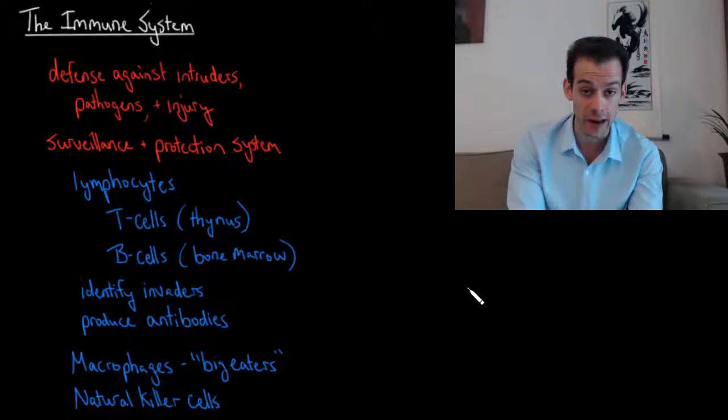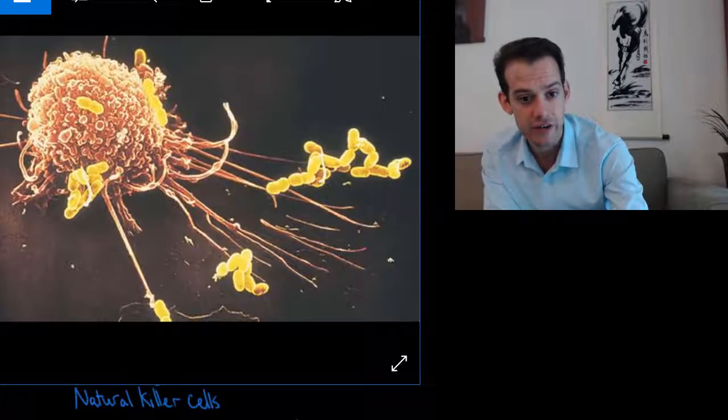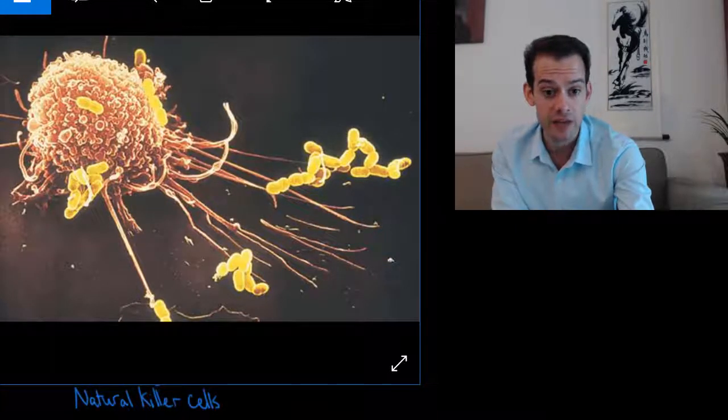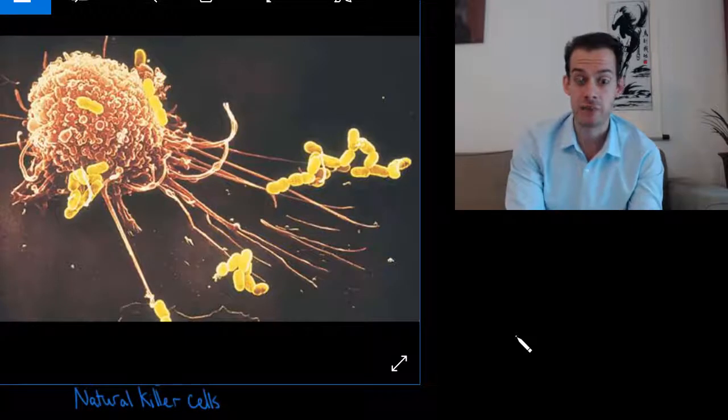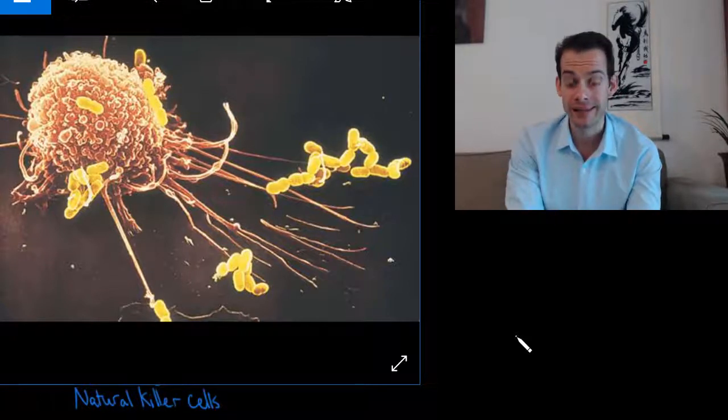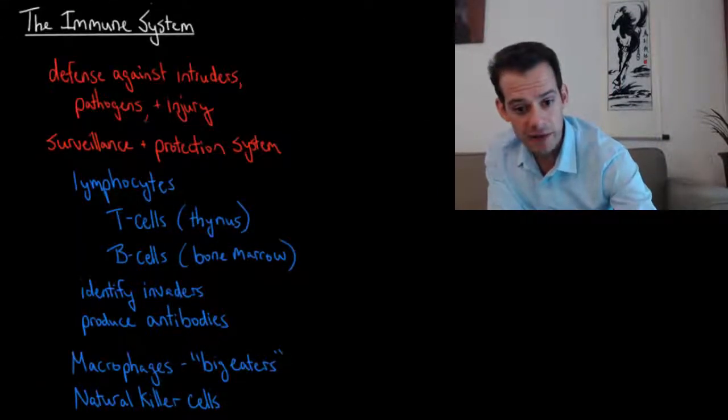And lymphocytes are aided in this task of fighting off invading cells by a couple other cell types including macrophages. And here's a macrophage here. And this large cell here with these tendrils coming off of it. This is the macrophage. And macrophage comes from the Greek for big eater. And what macrophages are able to do is they can actually consume invading cells or damaged cells in the body and then break them down and eliminate them.